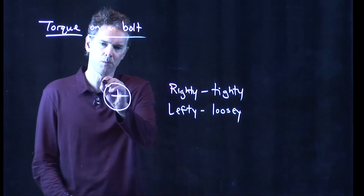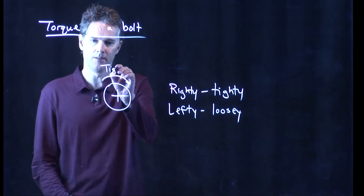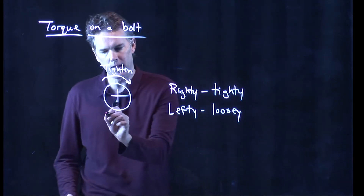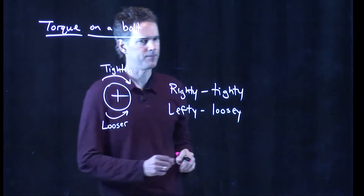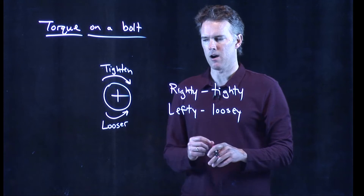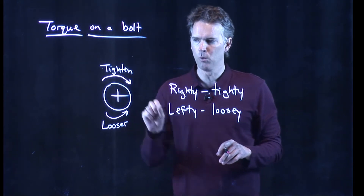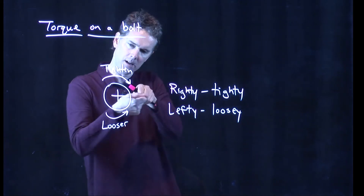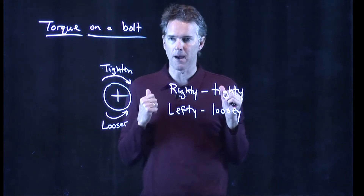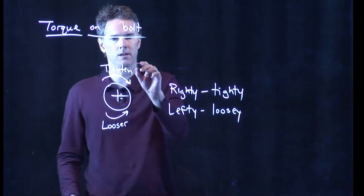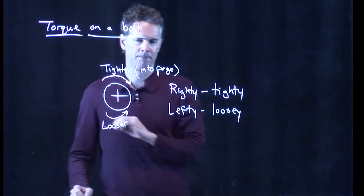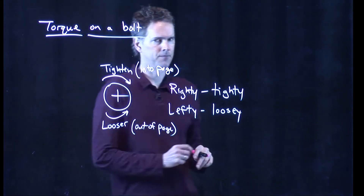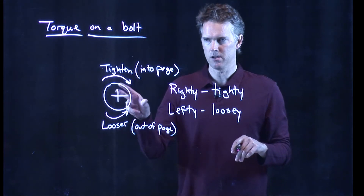Righty tighty, lefty loosey — that means if I turn this thing to the right, it gets tighter. If I turn it to the left, it gets looser. Now let's see if we can make sense of this in terms of which way the bolt is actually going to move. If this is my bolt in a piece of wood and I stick my screwdriver in and turn it to the right, does it go into the wood or does it come out? It goes into the page. When you go the other way, it comes out of the page. And this is another manifestation of the right hand rule.